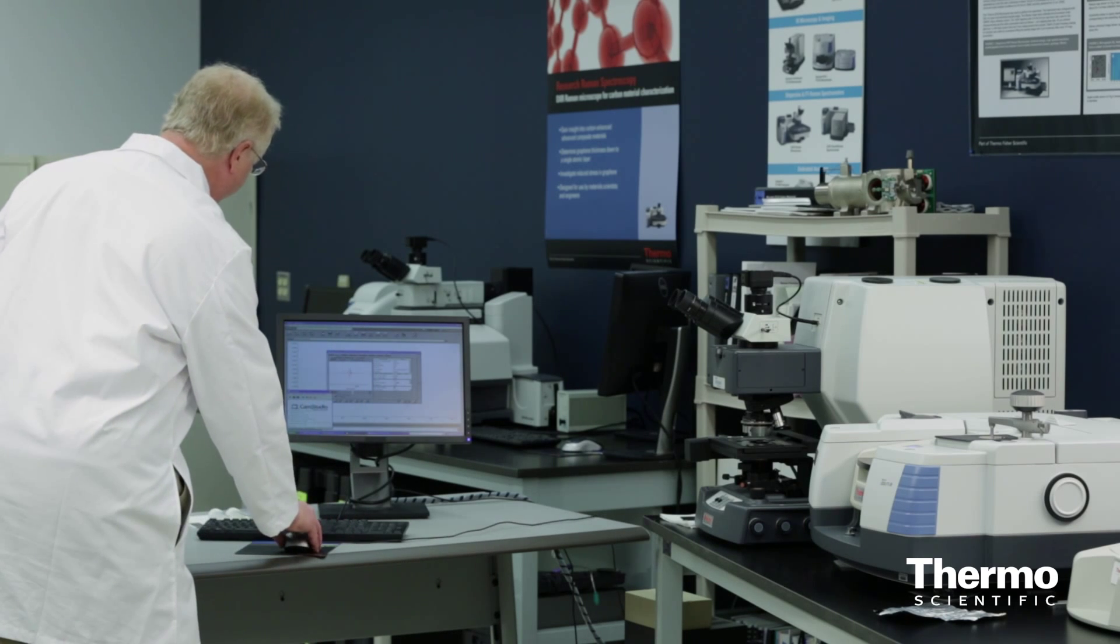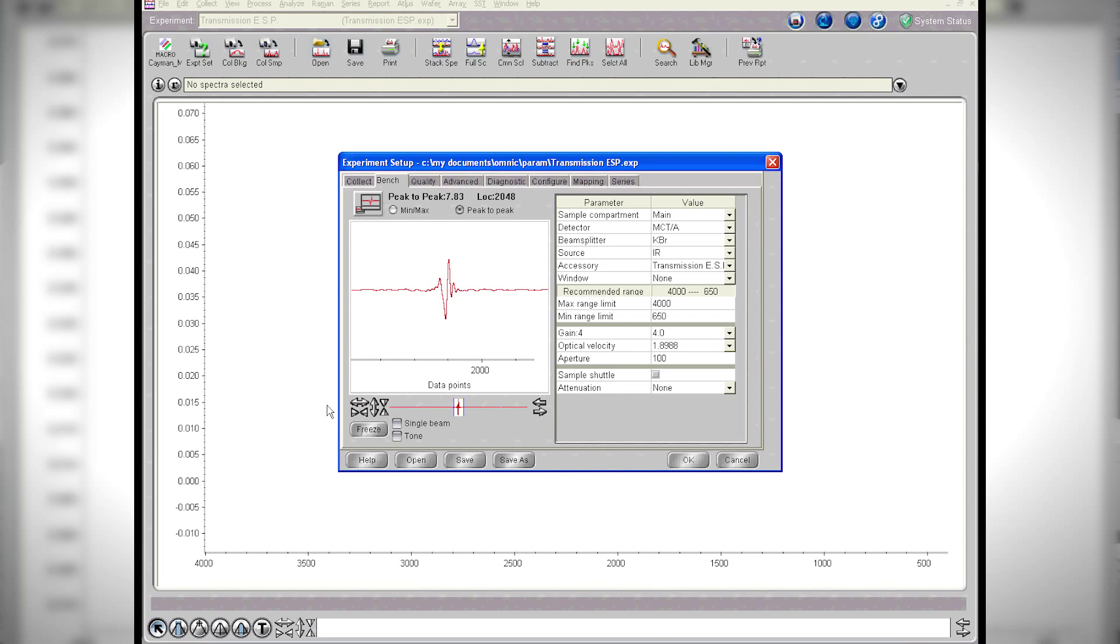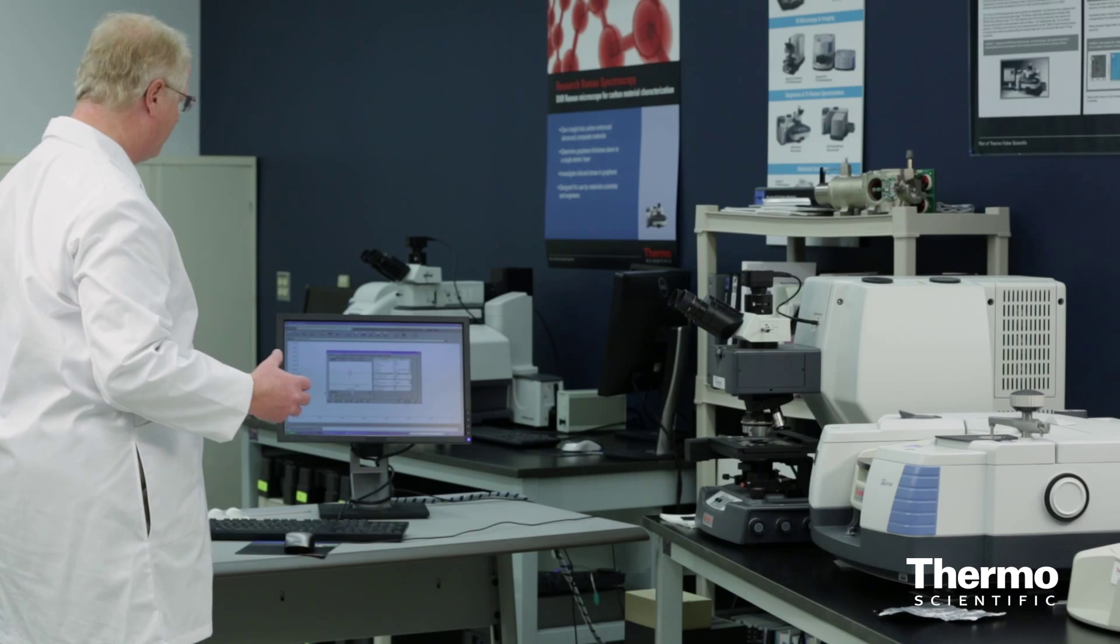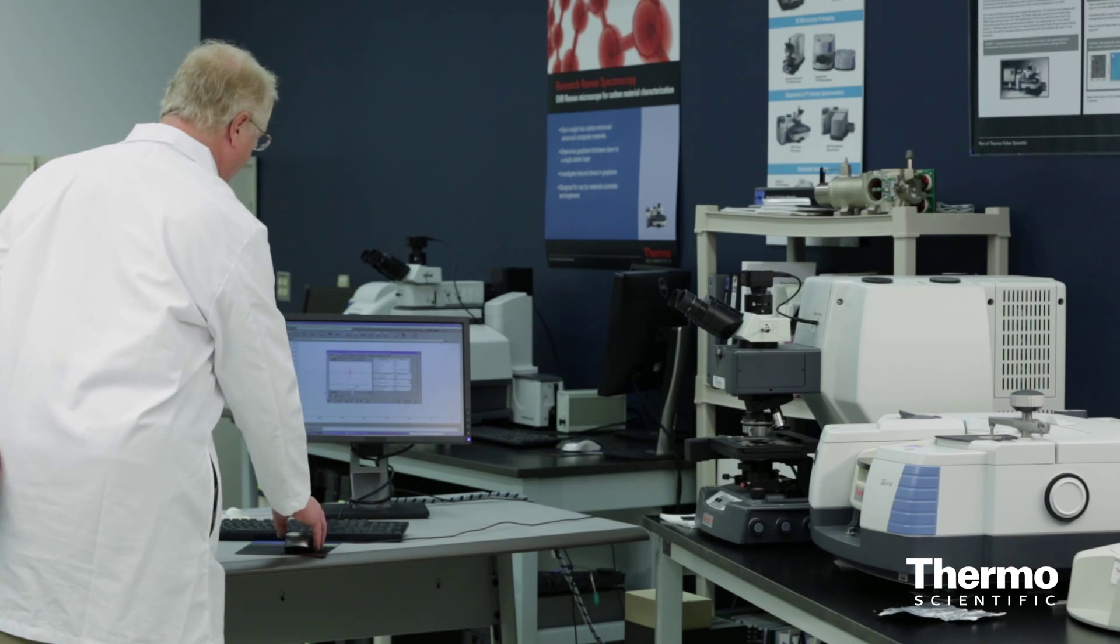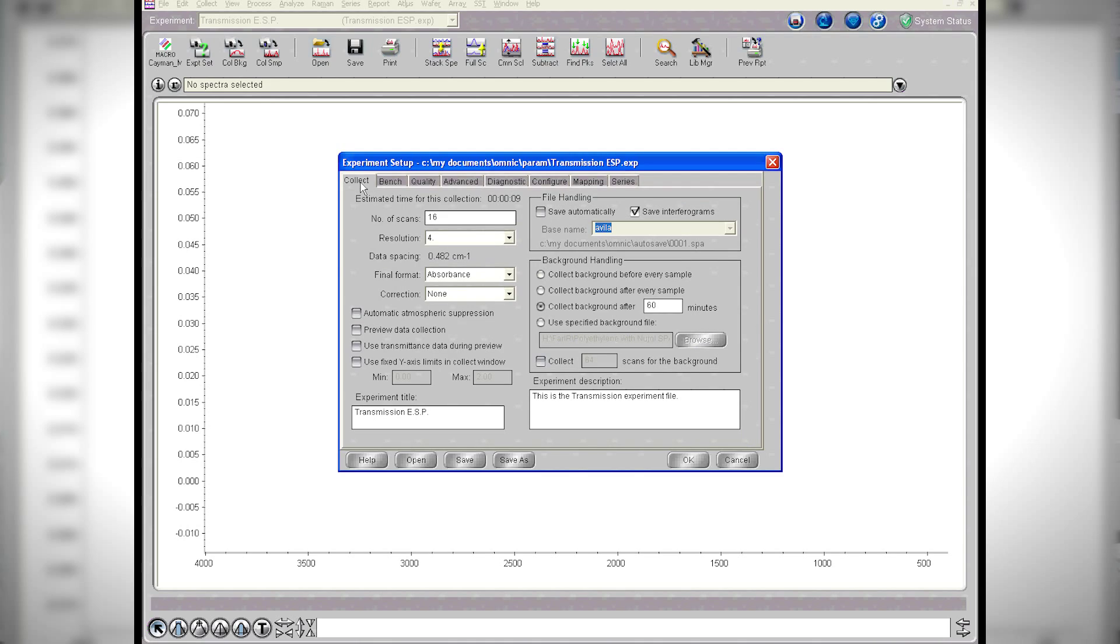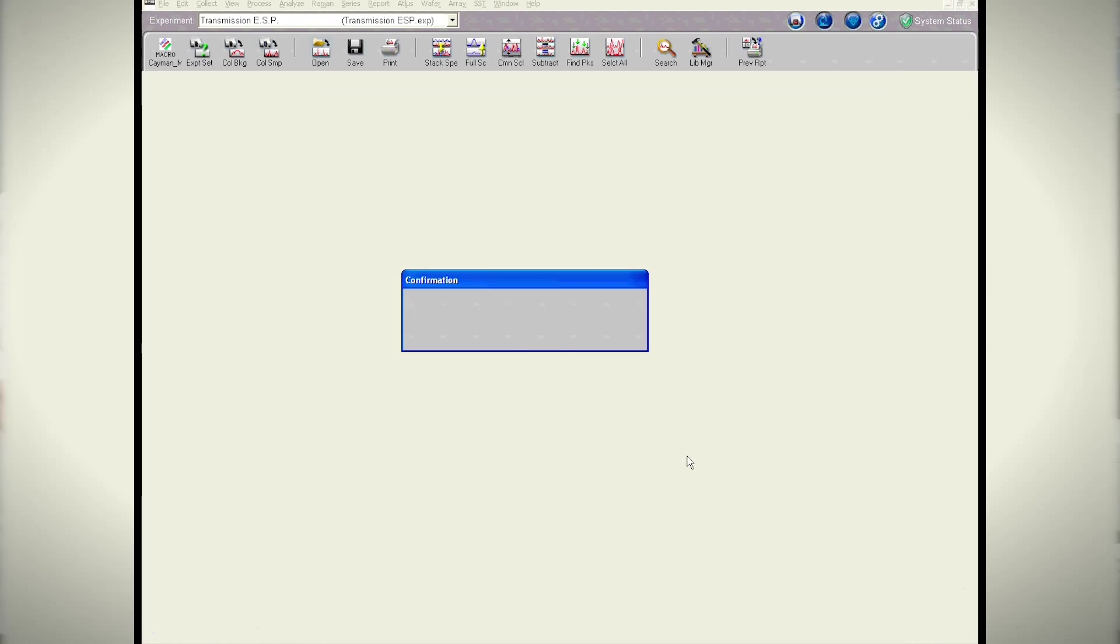Now let's move over to the instrument. You can see here on the instrument that I've got it set up to use the mercury cadmium telluride or MCT detector. I'm going to be collecting the data fairly quickly at a moderate resolution of only four wavenumbers. I'm going to collect 16 scans. So now I'm going to go ahead and collect the background first.